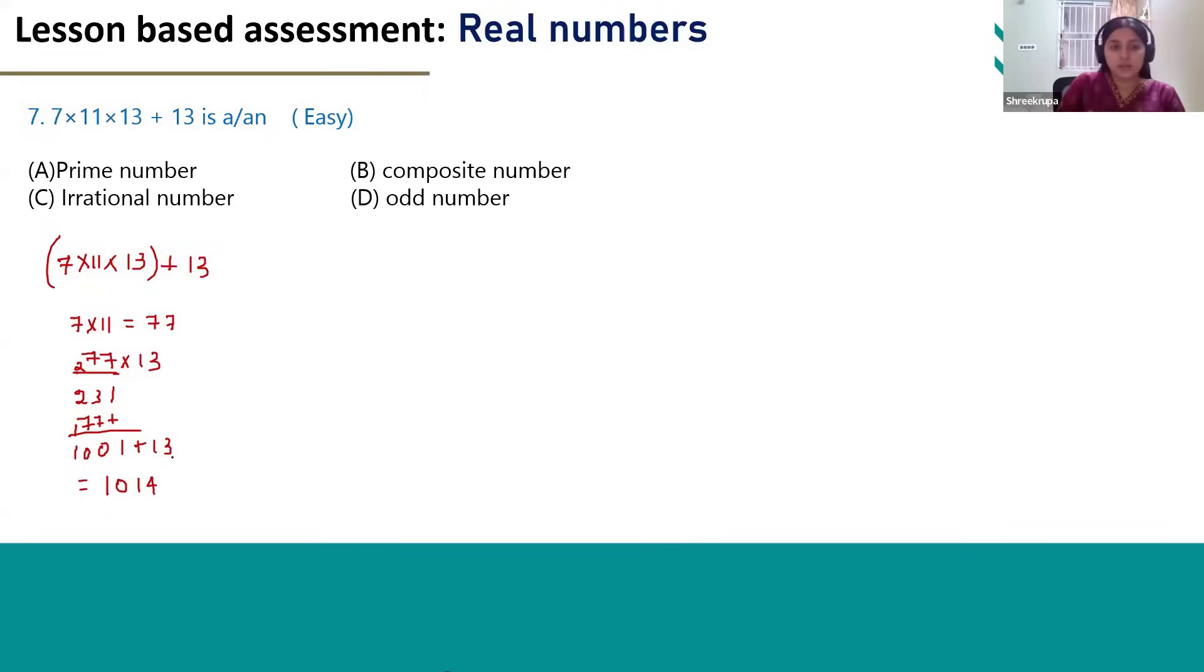This is an even number and here we can see 13 is common in this function. We can take this 13 out. We will get 7 x 11 plus 1 inside the bracket.